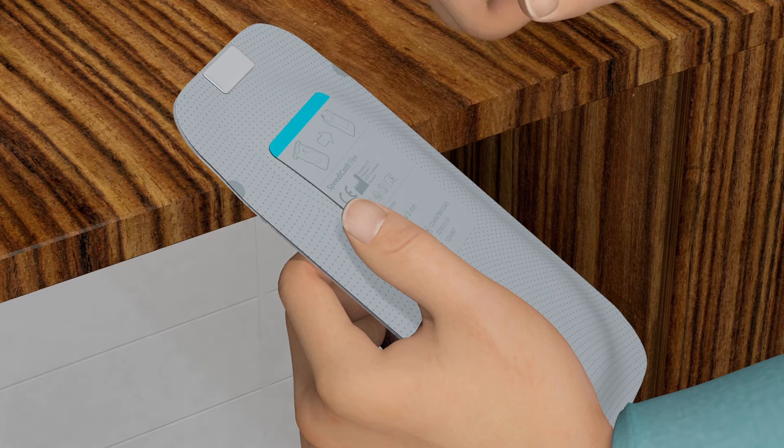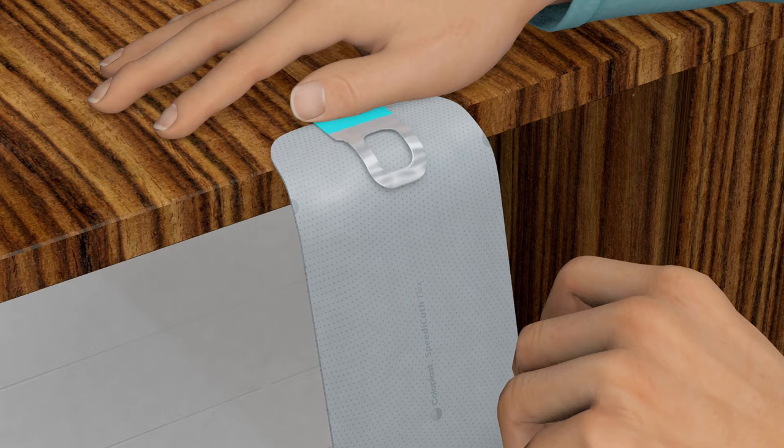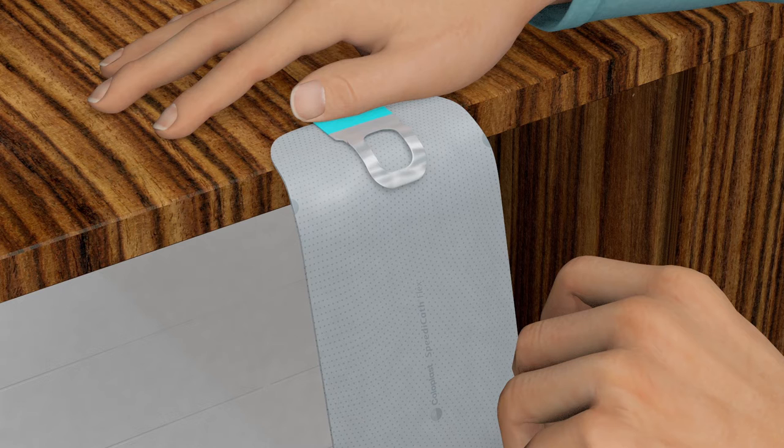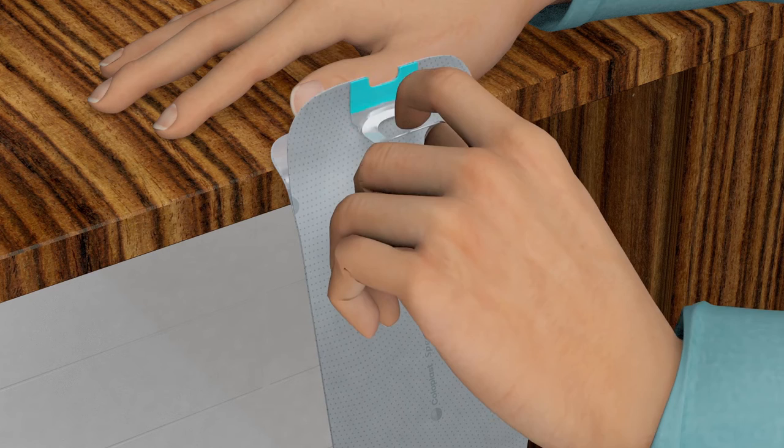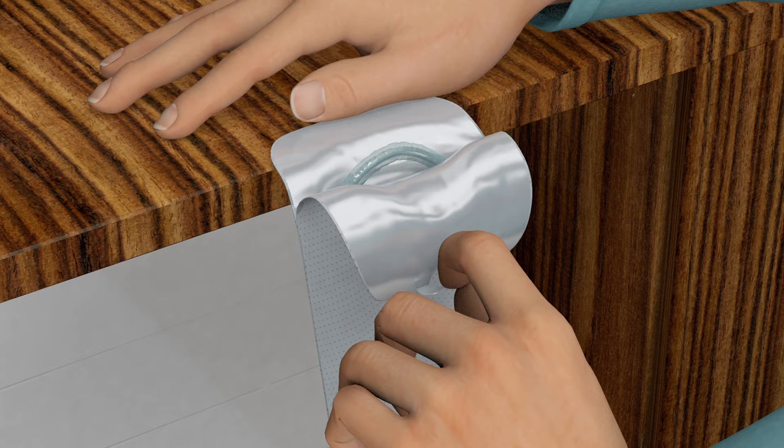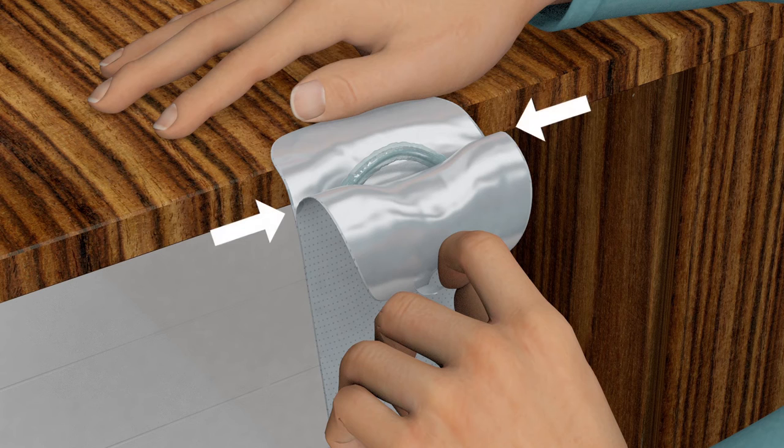Remove the cover label from the adhesive spot. Then attach the adhesive spot to a clean surface. The packaging must hang so that you can easily reach it when you are ready to use it. Open the upper end of the packaging by pulling the ring towards yourself and then downwards. You can also open the packaging without using the ring but do not open it using your mouth. Only peel to the tear stop indicated by the two grey dots.